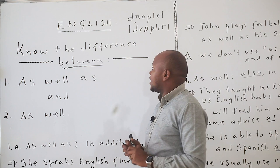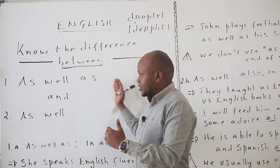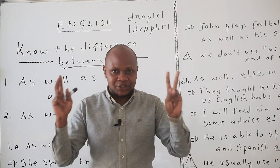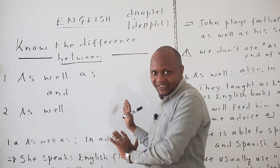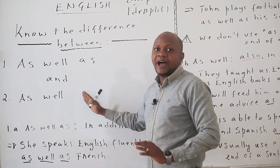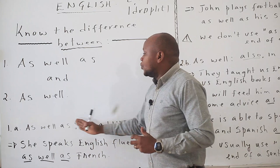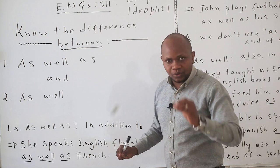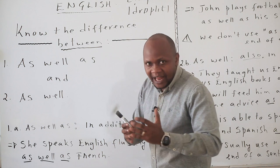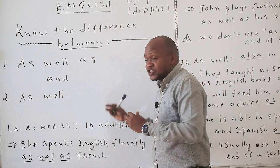Now let's look at the difference between as well as and as well. My dear student, do you know the difference between these two conjunctions in English? You should know that as well as and as well are both conjunctions. We use as well as to mean 'in addition to.' Even as well can have a similar meaning, but there is a little bit of difference in terms of usage.